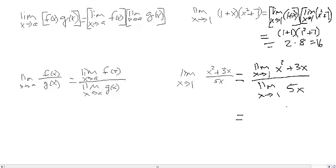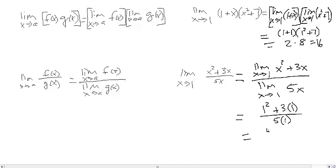By direct substitution, we get (1 squared + 3 times 1) divided by (5 times 1). Since 1 squared is 1, we have 1 + 3 = 4 divided by 5, giving us 4/5.